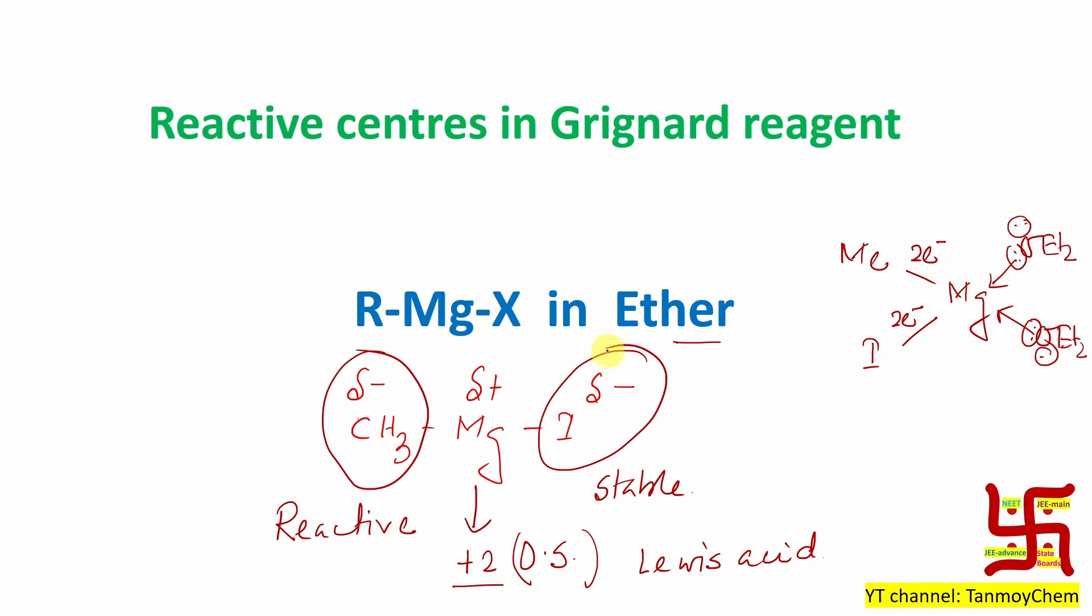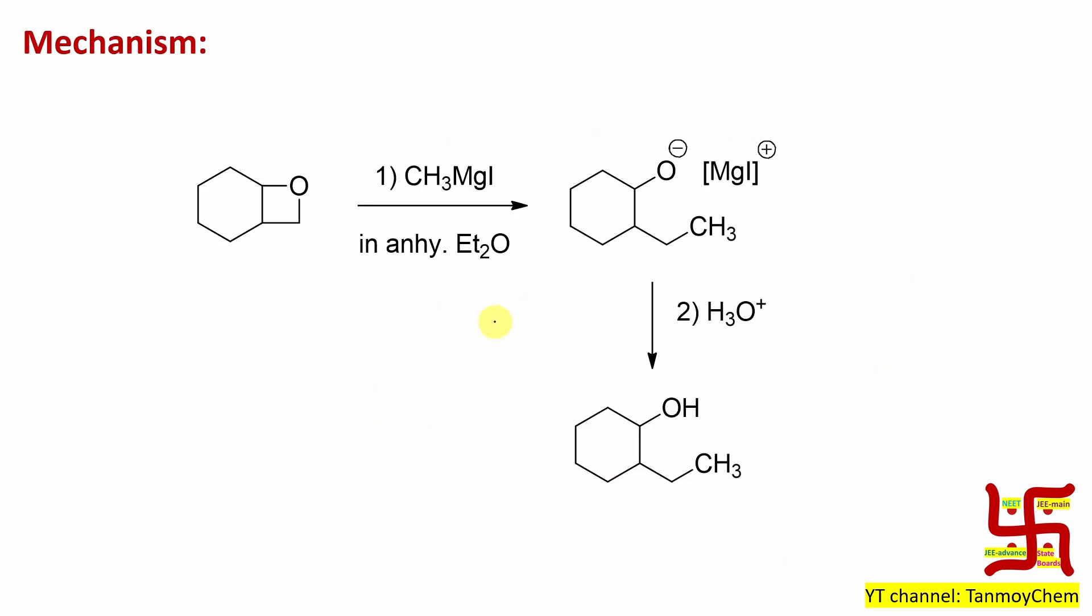That's why ether is taken and why anhydrous? Because this carbon is delta negative if water is present. So, that water can react with this carbon, this methyl and it can produce alkanes. So, that is a waste of Grignard reagent. That's why anhydrous solvents like anhydrous ether is used.